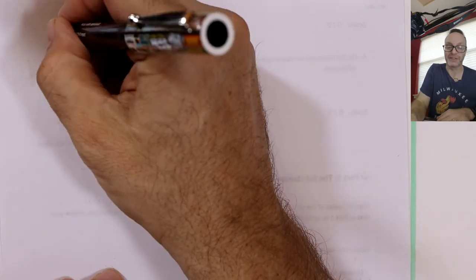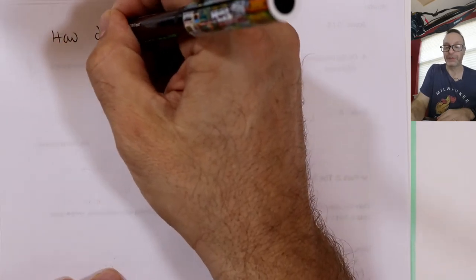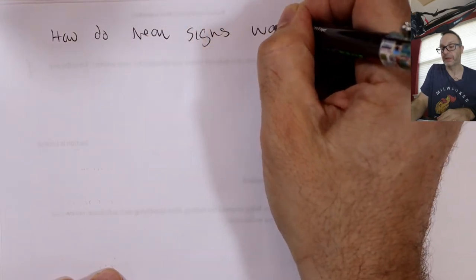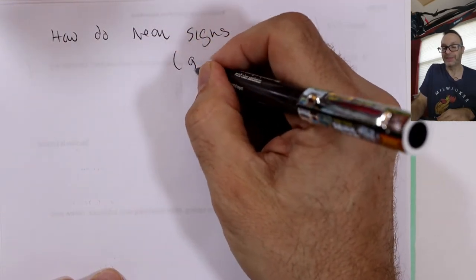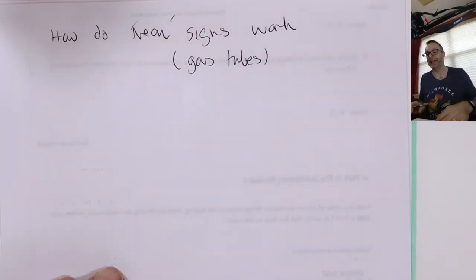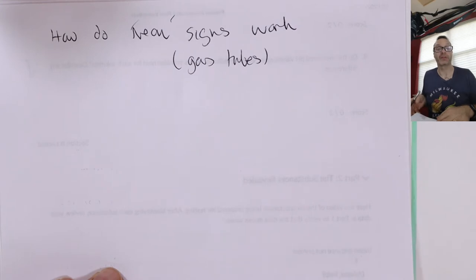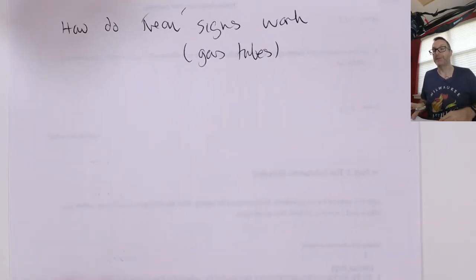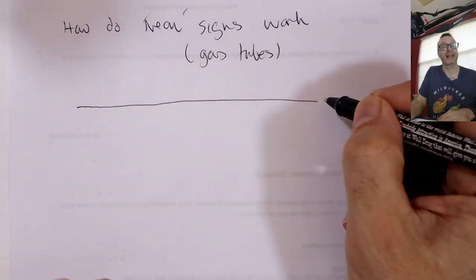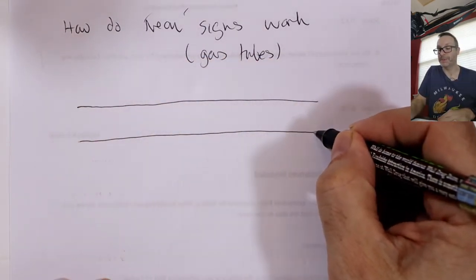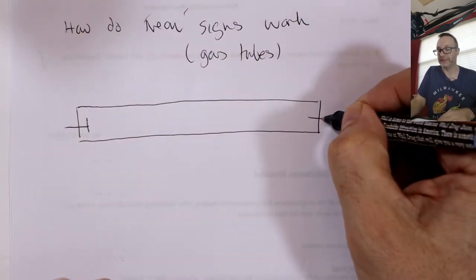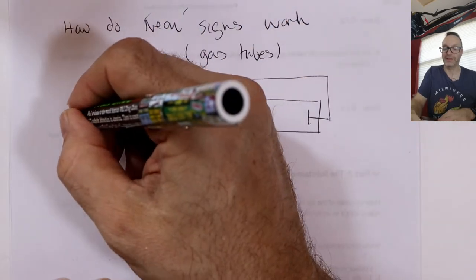So, the question is: how do neon signs work? In science they're sometimes called gas tubes, because we can swap out neon for any gas we like, which will give a different color light. If you've ever seen one of these things, it's a bit like an old fluorescent light in the kitchen — basically a glass tube capped at each end with a couple of electrical contacts going off to the mains electricity.